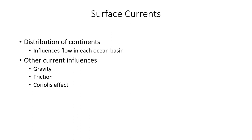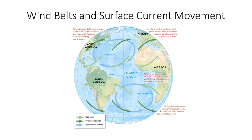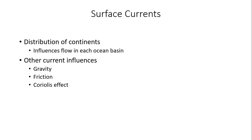Moving further into surface currents — the ocean currents and pressure belts are disrupted by land masses. These land masses prevent ocean currents from going unimpeded west to east in the middle latitudes, causing them to create a circular gyre pattern instead. The distribution of continents is huge and influences flow in each ocean basin. As a reminder, the northern hemisphere is 60% land mass and 40% water, while the southern hemisphere is the opposite — 40% land and 60% water — so the southern hemisphere is influenced much more by water.